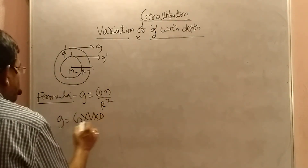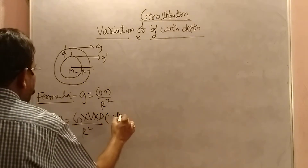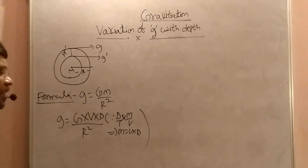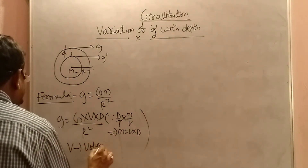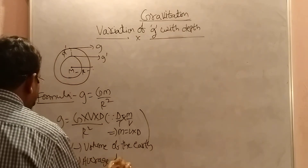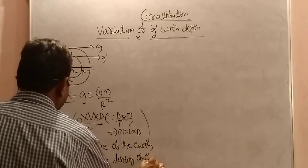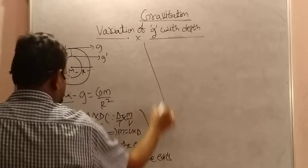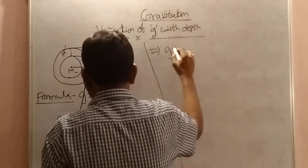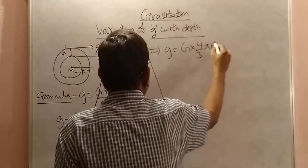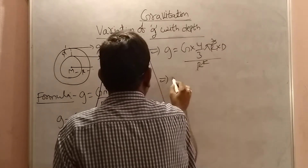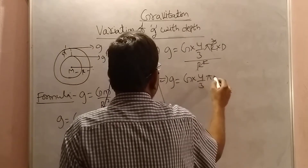Mass is equal to volume into density, since density equals mass by volume. Here D is density and V is volume — volume of the earth — and D is the average density of the earth. What is the formula for volume? 4 by 3 pi r cube, since the earth is an approximate sphere. This implies g equals capital G into 4 by 3 pi r cube into capital D, divided by R squared.